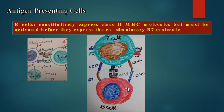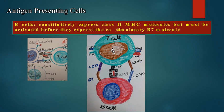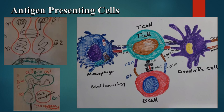The activated B-cell then upregulates B7 co-stimulatory molecules, which interact with CD28 on the surface of the T-cell. This interaction is necessary to send activation signals to specific genes in the nucleus of the T-cell. These three cell types — macrophages, B-cells, and dendritic cells — are the professional antigen presenting cells.